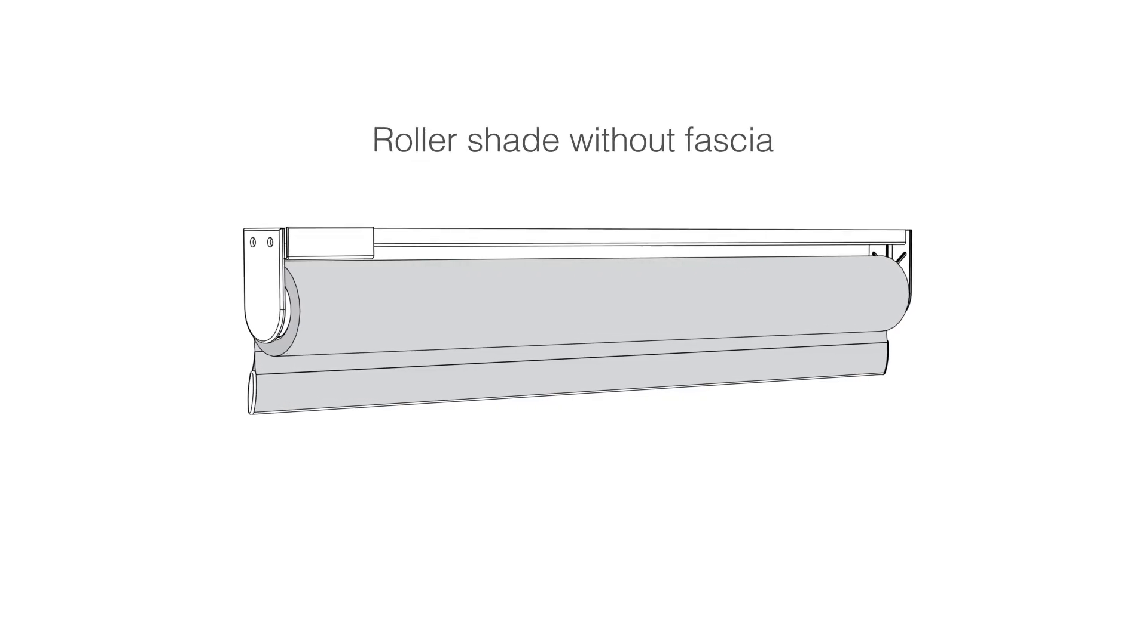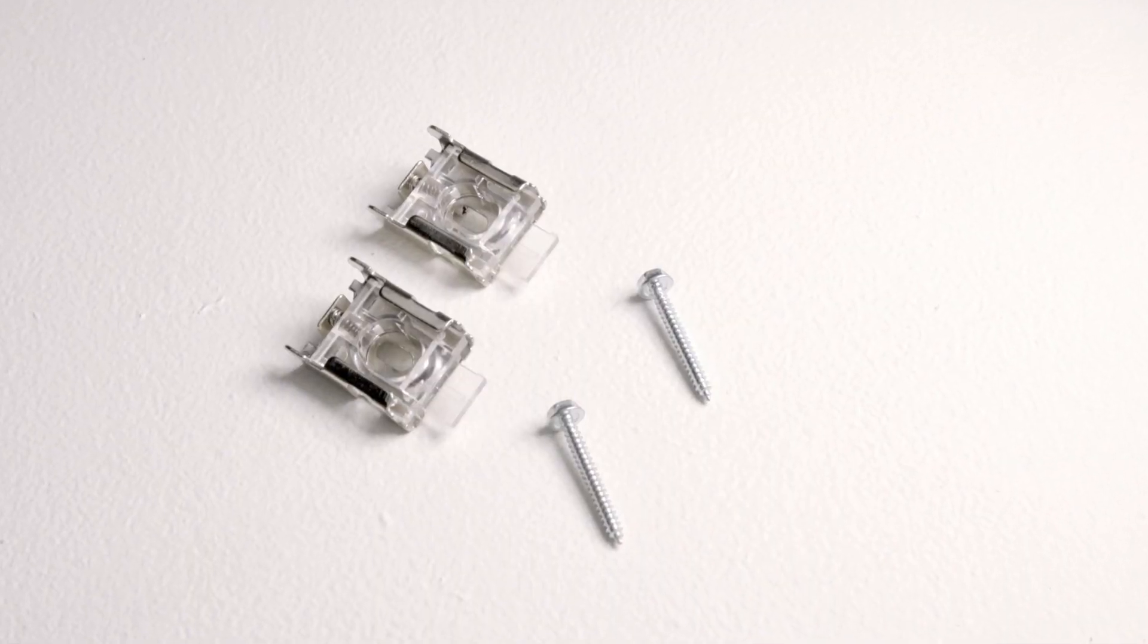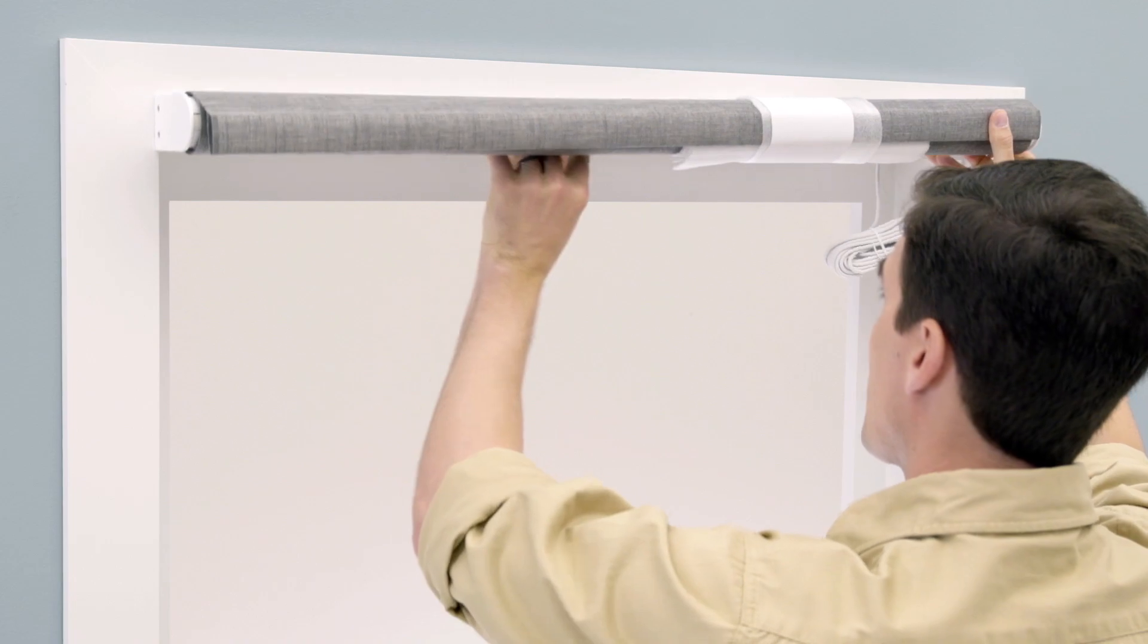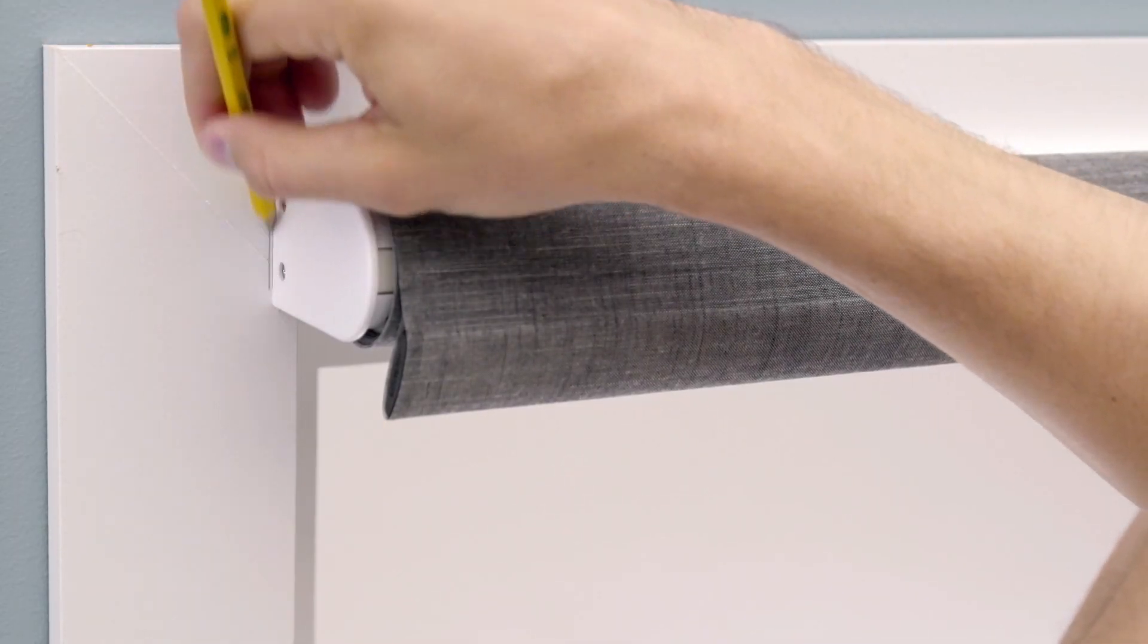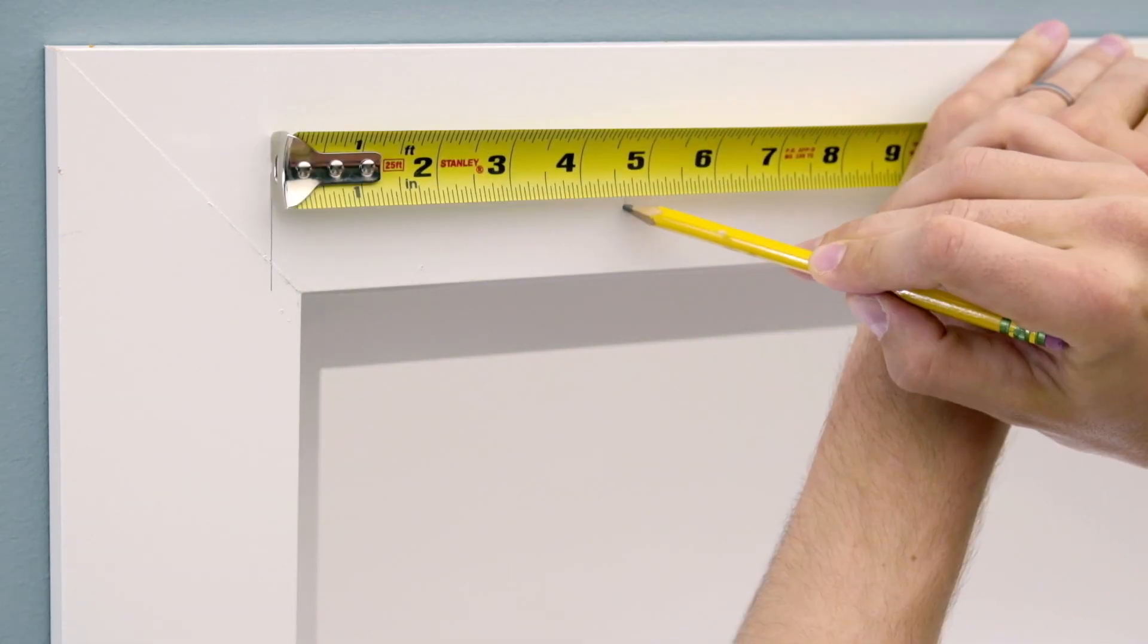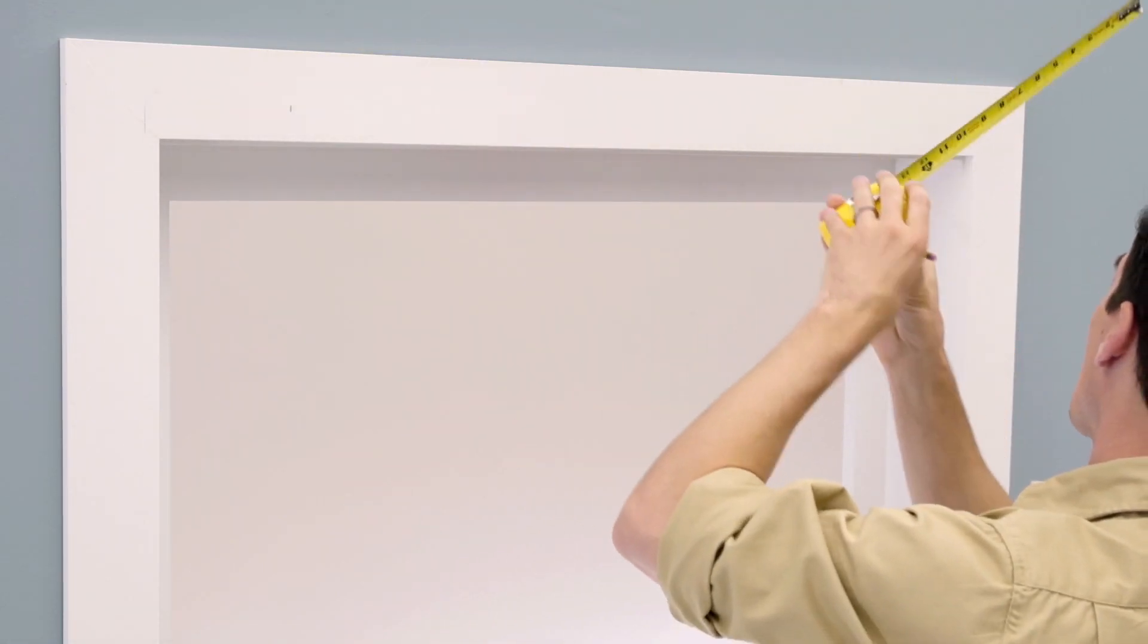First, we will show how to install a roller shade without fascia using mounting brackets. Hold the shade up to the mounting surface and use a pencil to mark each end of the shade. Then, mark the location of each bracket approximately 5 to 7 inches from each end of the shade.